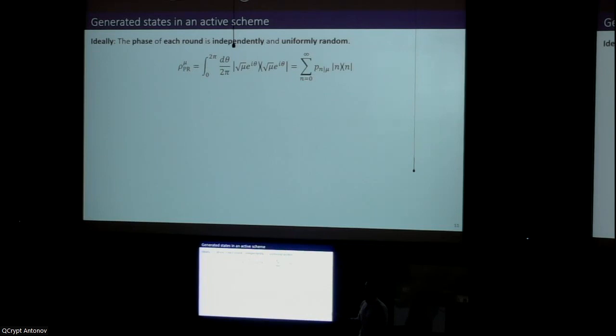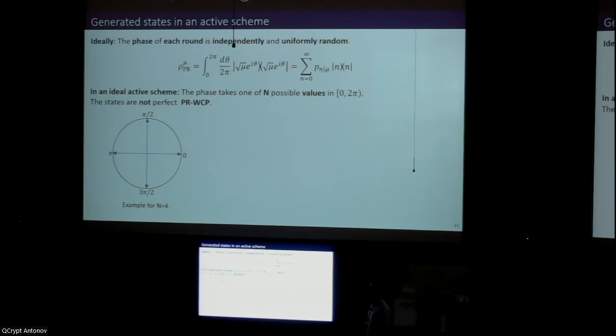As Guillermo told us, ideally in a decoy state experiment we would be generating phase randomized weak coherent pulses. But the thing is that right from the beginning in an ideal active scheme, we are not generating phase randomized weak coherent pulses because the phase only takes one of n possible values in the interval zero to 2π. Here's an example for the case of n equals four. The security of this scenario has already been analyzed in a work that was released in the year 2015.